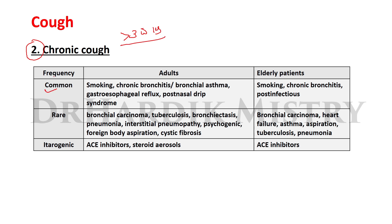Chronic cough is defined as more than three weeks in duration. Common causes in adults include smoking, chronic bronchitis, bronchial asthma, gastroesophageal reflux, and post-nasal drip syndrome. In elderly patients, common causes include smoking, chronic bronchitis, and post-infectious causes.